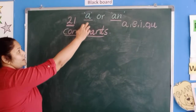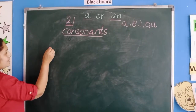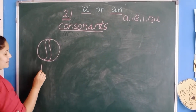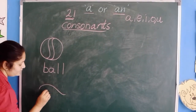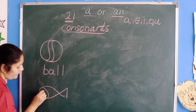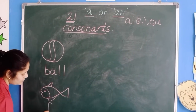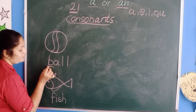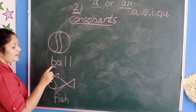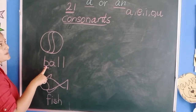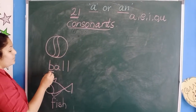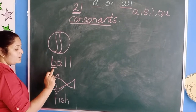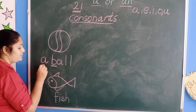Now let us see when to use A. I am drawing something — just tell me what it is, okay? Which picture is this? Yes! This is a ball. Now here, we have to see the first letter. The first letter is B. So, is B a consonant or a vowel? B is a consonant, right? Whenever the word starts with a consonant, we use A.